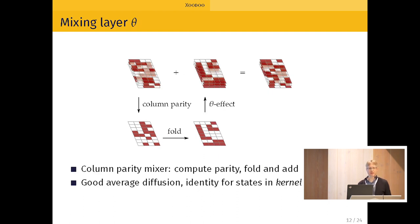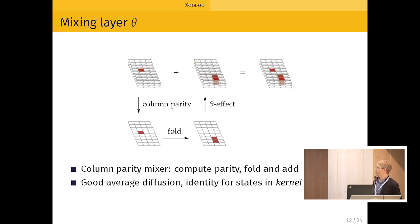Theta is the mixing layer. So it's a column parity mixer. So the idea is that we first compute the parity of all the columns. Then there is some folding. So the idea is that two copies of the parity are XORed together with different translations. Then the result is XORed back into the state. And that's the result. So if you have just one bit set to one, you can see the effects. So the parity will be one bit. Then the folding will be two bits, and then six bits will be XORed to the state. Of course, if you have two bits set to one in the same column, the parity is zero and there is no effect. That's the kernel.